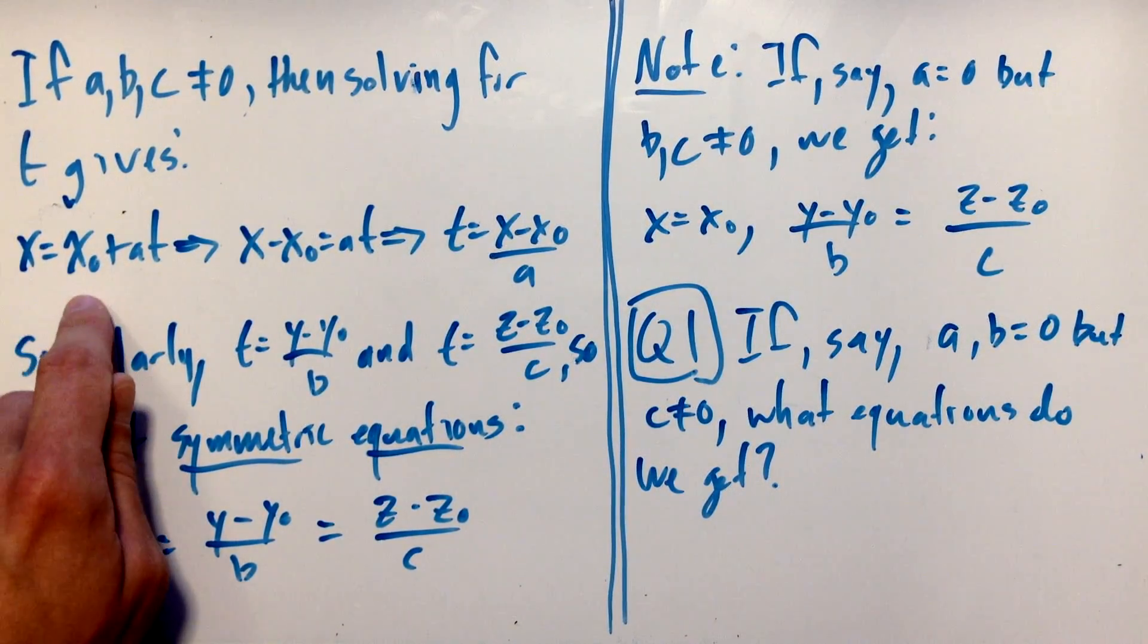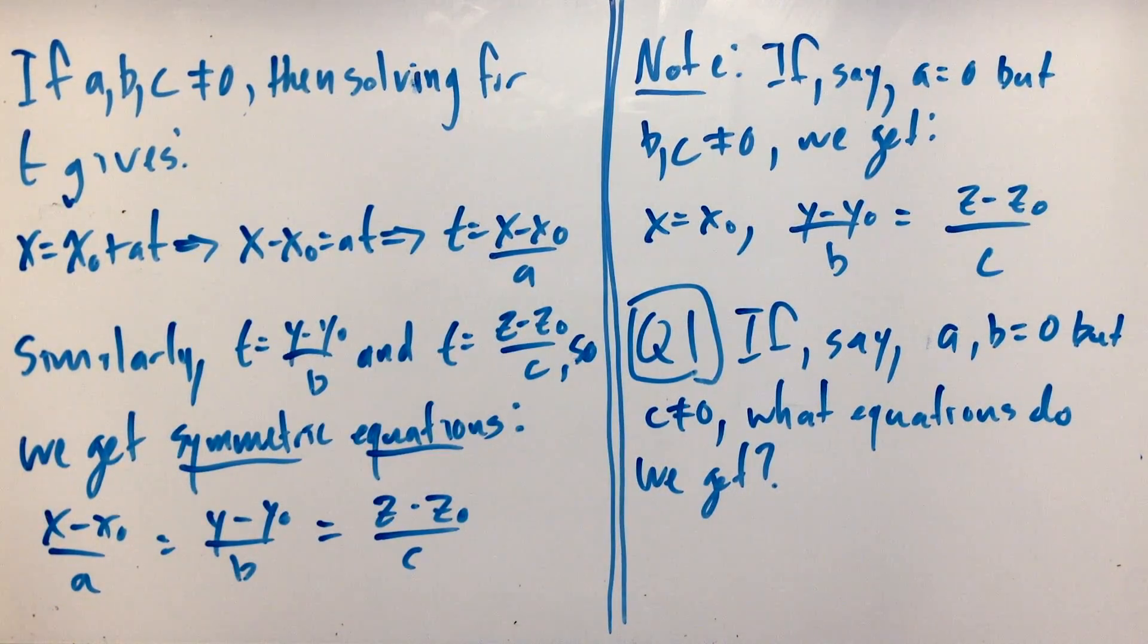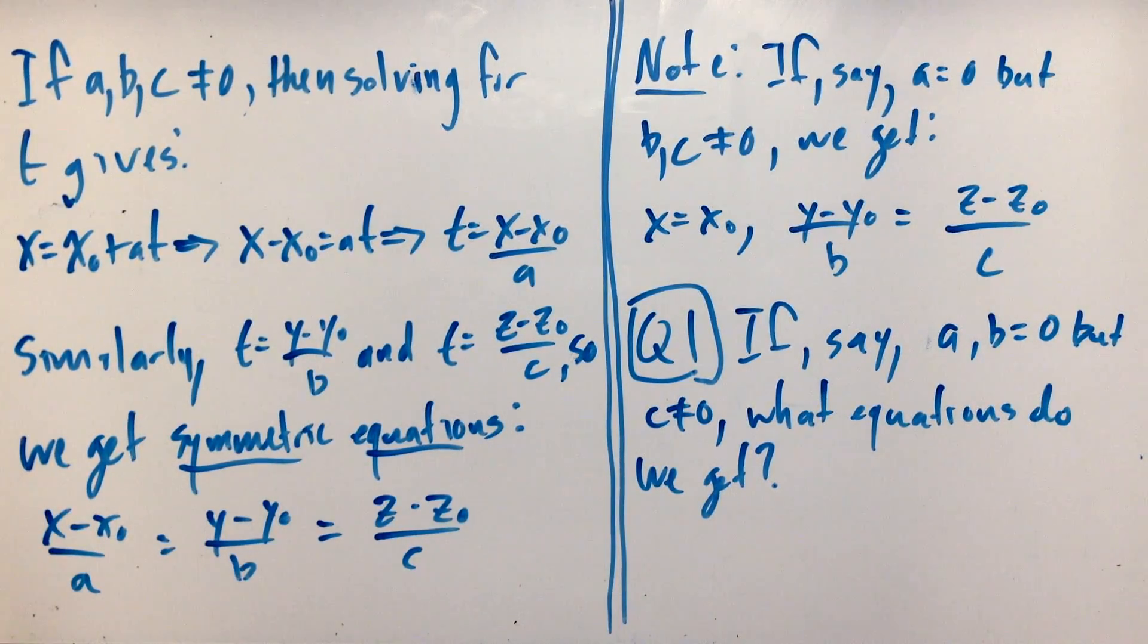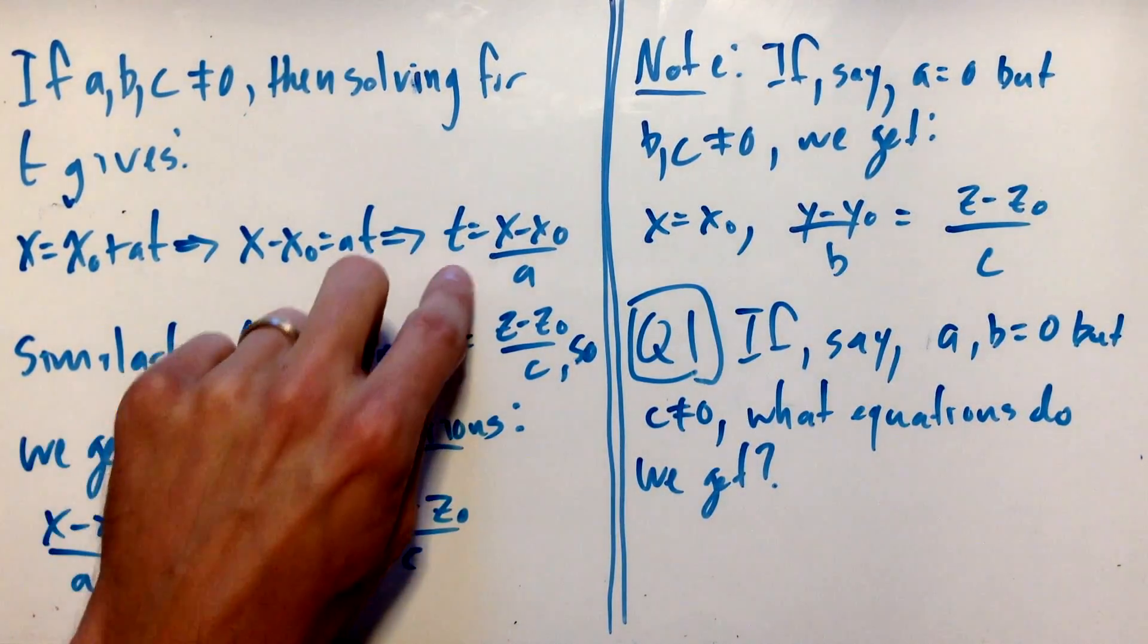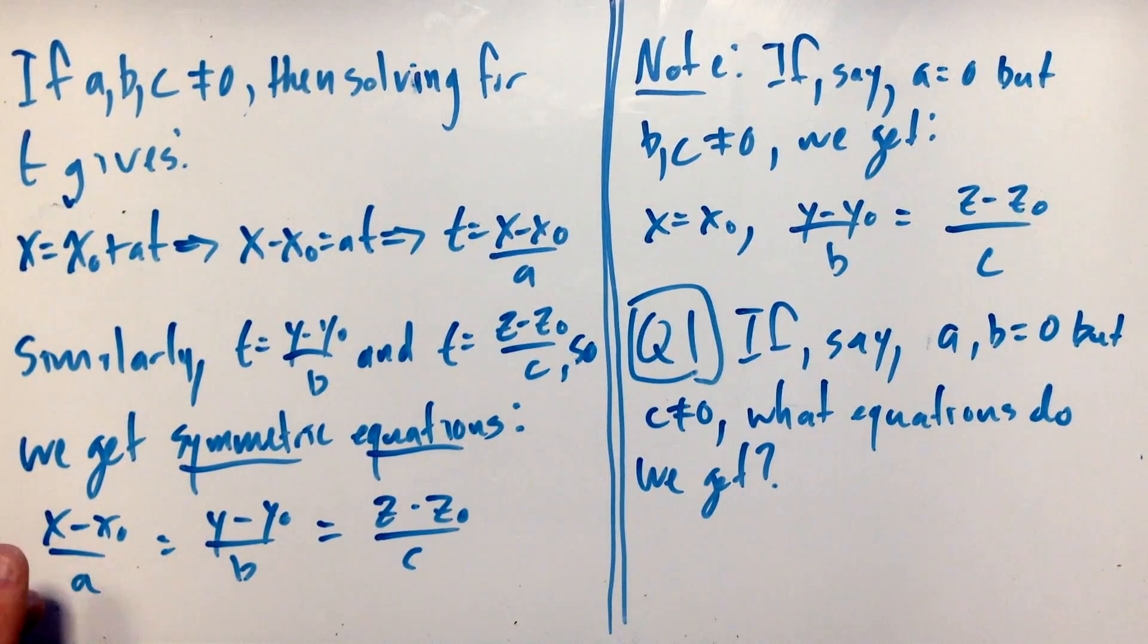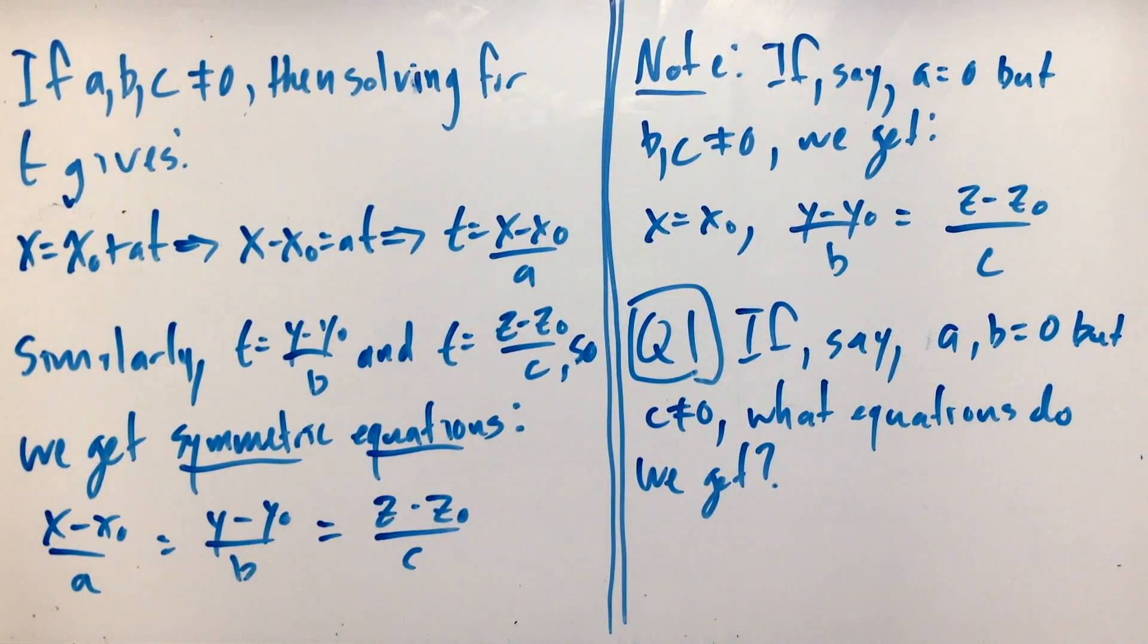Similarly, we get t = (y - y0)/b and t = (z - z0)/c. Since any point is given by plugging in the same value t for all the different coordinates, these t's must all be the same. So we get symmetric equations: (x - x0)/a = (y - y0)/b = (z - z0)/c.